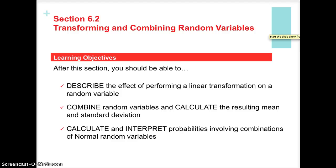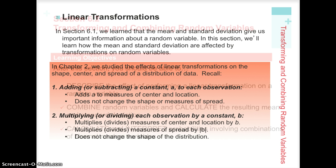Once we get through with this section, we'll be able to describe the effect of performing a linear transformation on a random variable — not just a single value, but the entire distribution, all of the values the random variable can take on. We will also be able to combine random variables and calculate the resulting means and standard deviations, for both discrete distributions and normal random variable distributions.